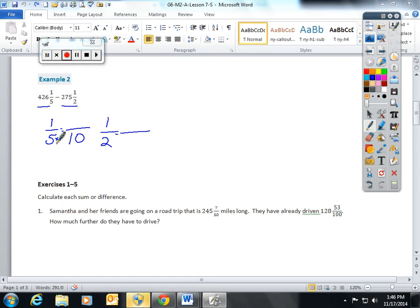5 times 2 gives you 10, whatever you do to the bottom, you do to the top. So this can be rewritten as 426 and 2/10, or 0.2. 1/2 can also be scaled up to 5/10, and we're going to subtract 275 and 5/10 from 426 and 2/10.